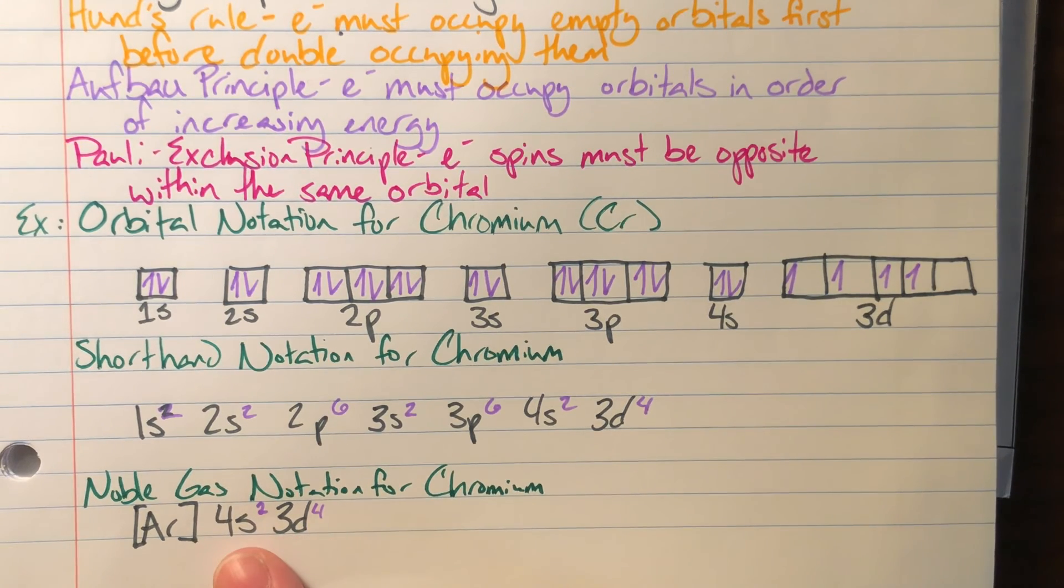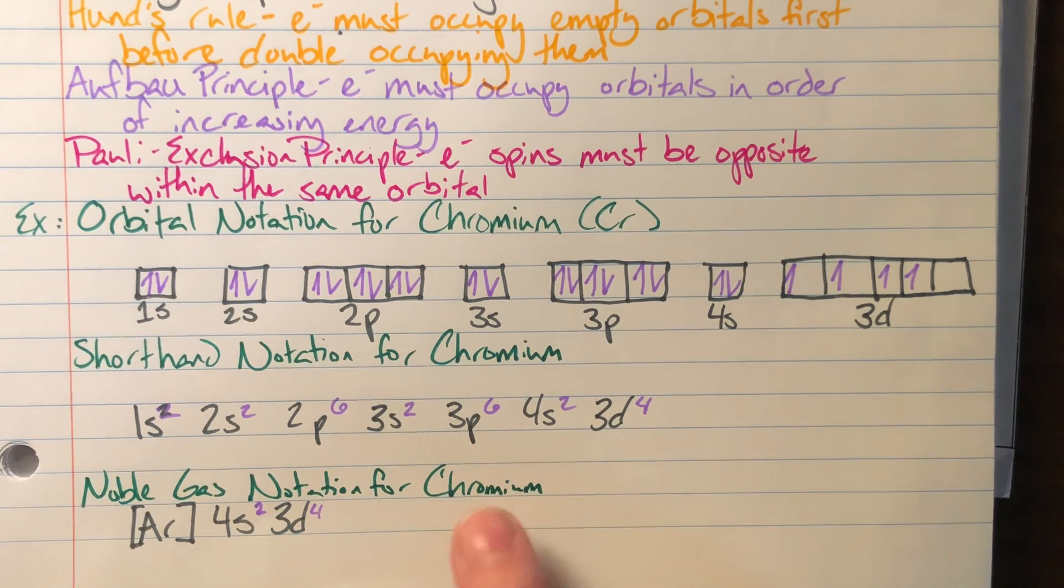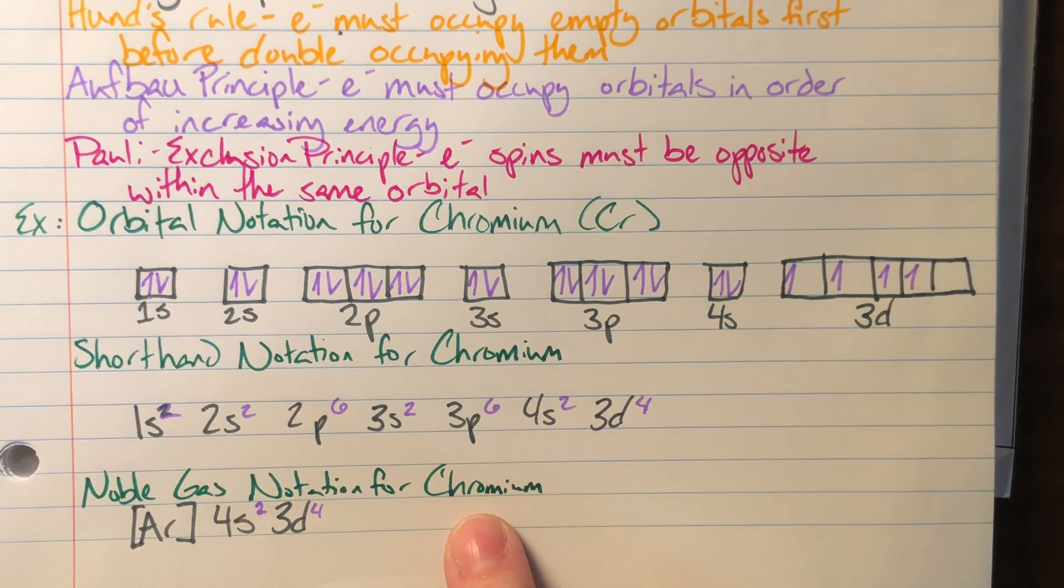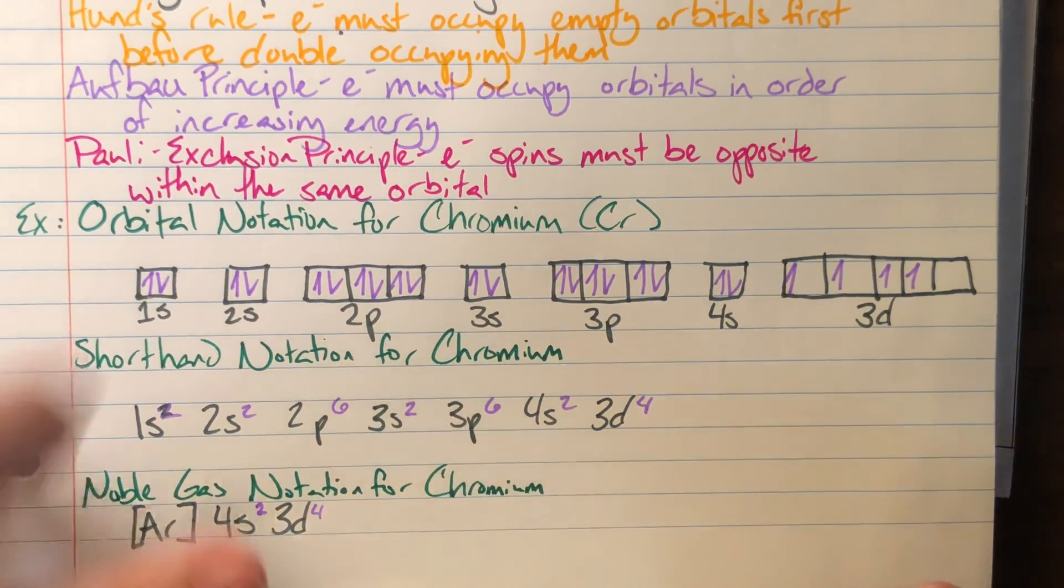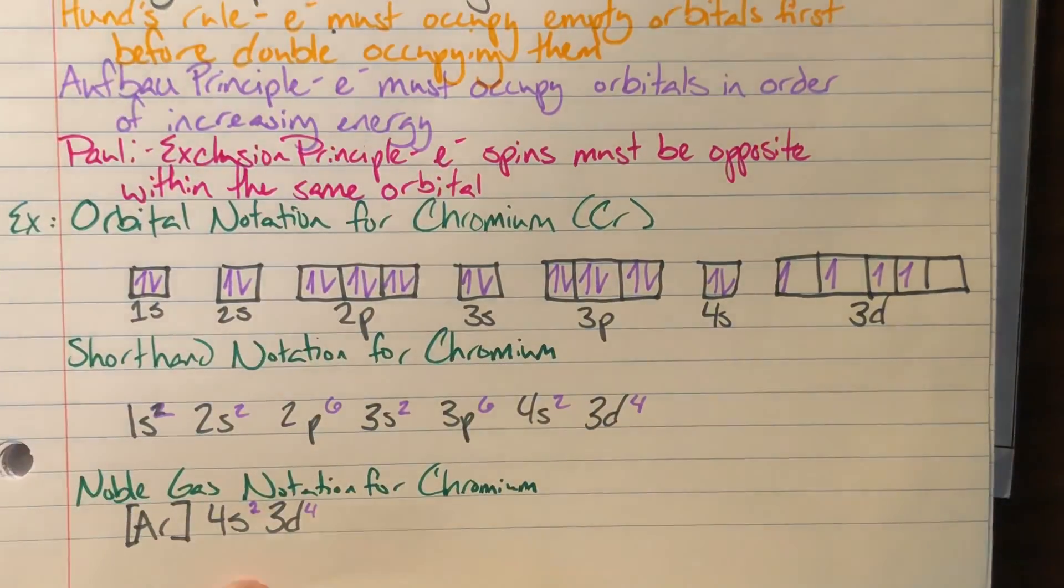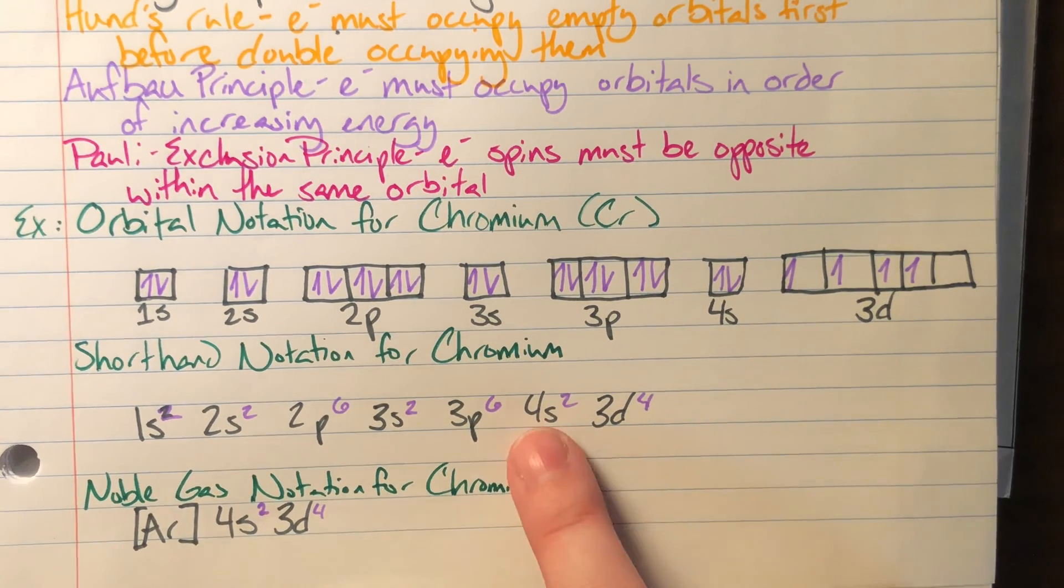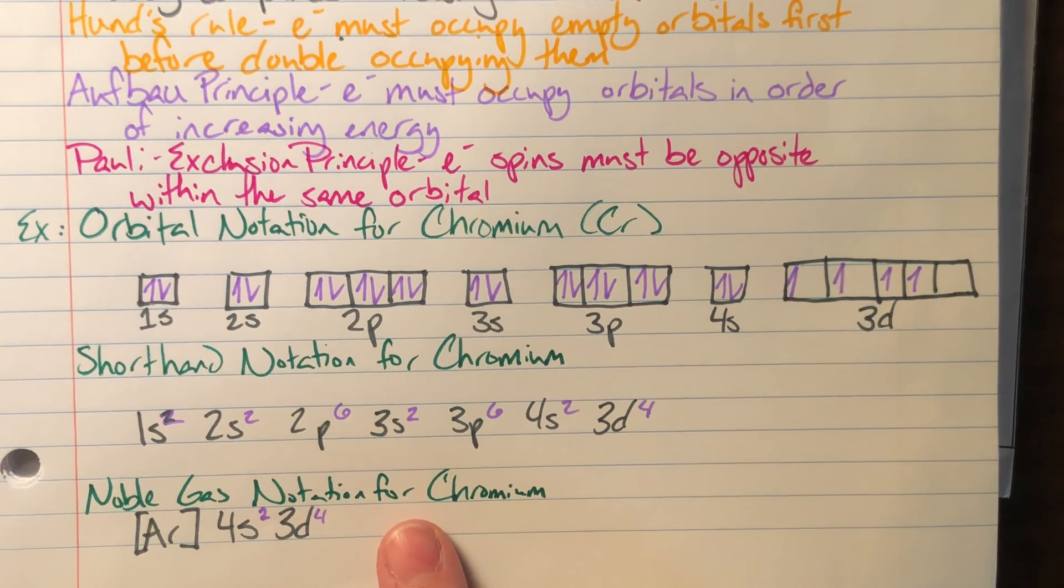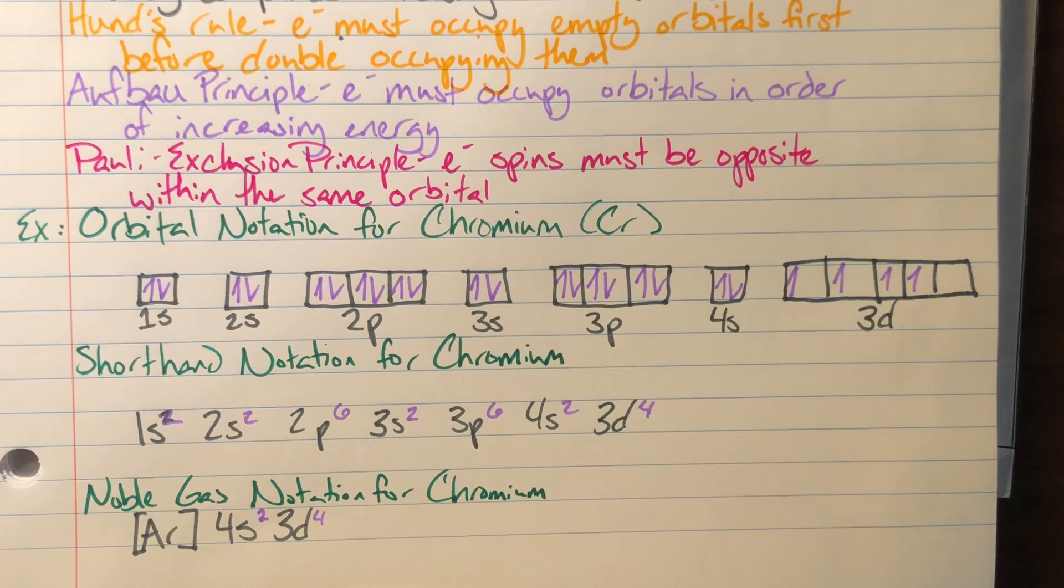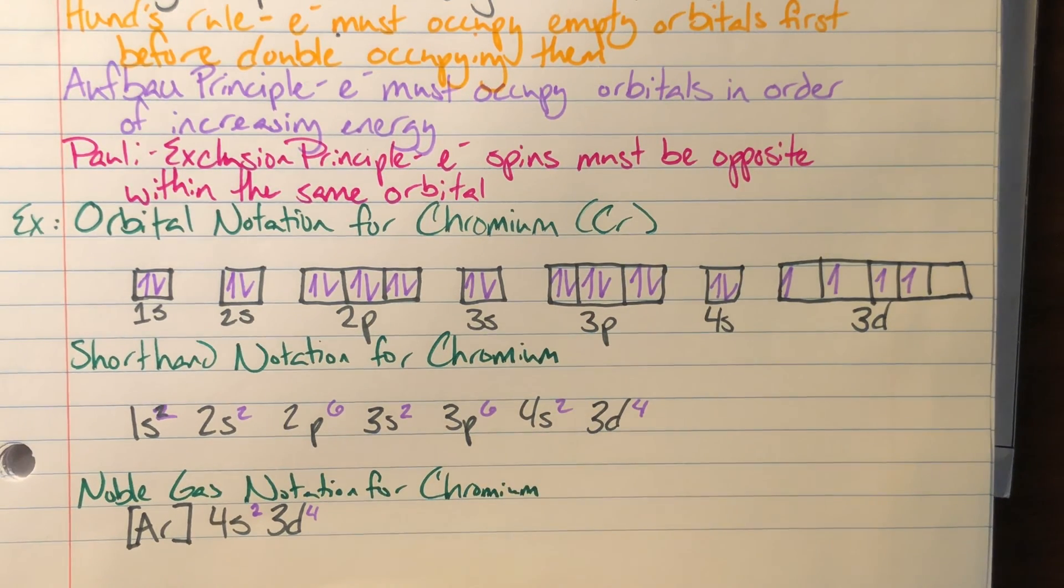Argon does not have any electrons in 4s or in 3d, but chromium does. Argon is up until the 3p6. So this is all overtaken by just me saying bracket argon bracket. And then I just have to restate any electrons that are not accounted for within the argon electron configuration, which is just 4s2 and 3d4.